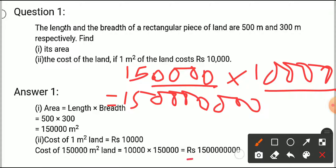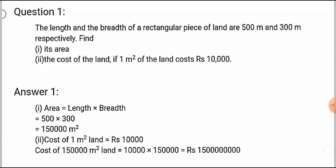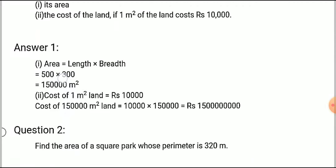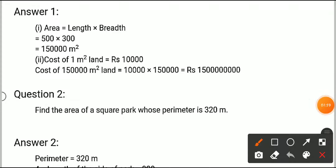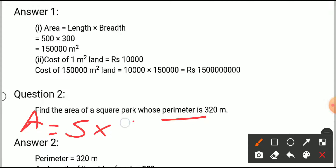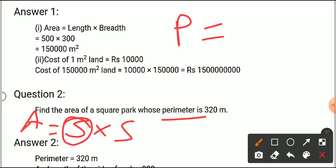Question number two: find the area of a square park whose perimeter is 320 meters. We know the area of a square equals side into side. In this question we don't have the side, but we have the perimeter. The perimeter of a square is 4 into side, so we can use this formula to calculate the side.